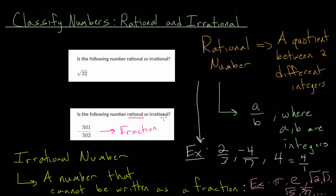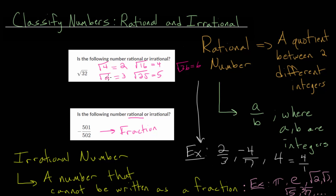An irrational number cannot be written as a fraction. Looking at this square root, because it is a root, it is possible that it could be irrational. Certain square roots are rational — for instance, the square root of 4 is just 2, the square root of 9 is 3, the square root of 16 is 4, the square root of 25 is 5, and the square root of 36 is 6. If the number underneath the square root can be written as a perfect square, then it's a rational number.